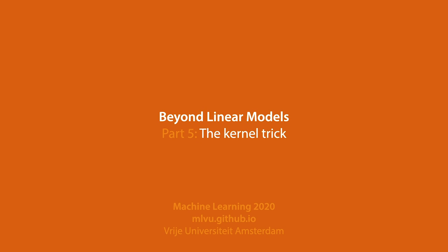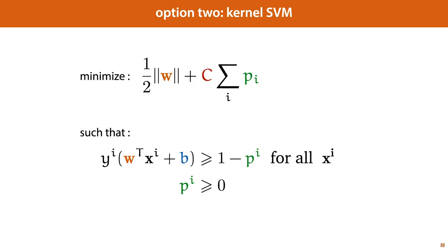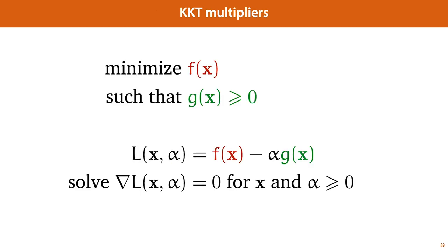In this video, we'll take the concepts that we learned in the last video about solving constrained optimization problems and apply them to the objective we worked out for support vector machines. To reiterate, this is the method we learned about in the last video, that of KKT multipliers.